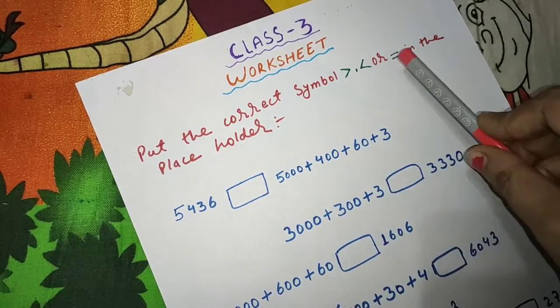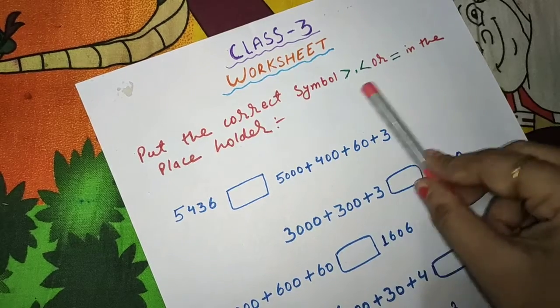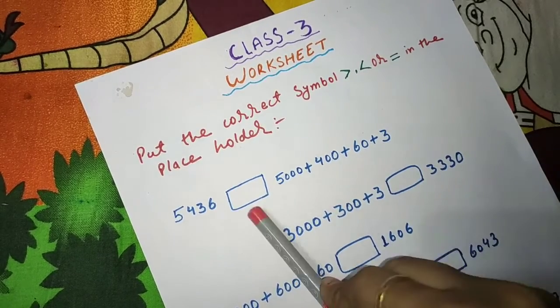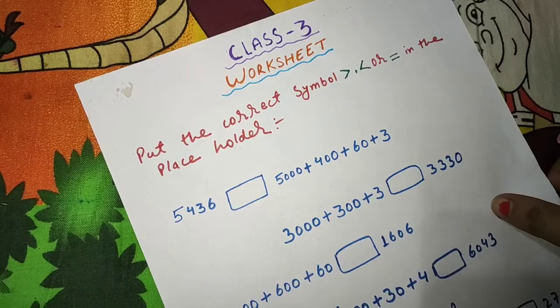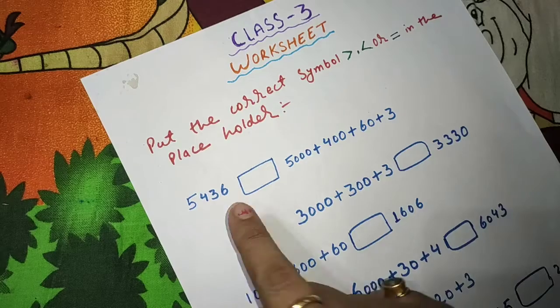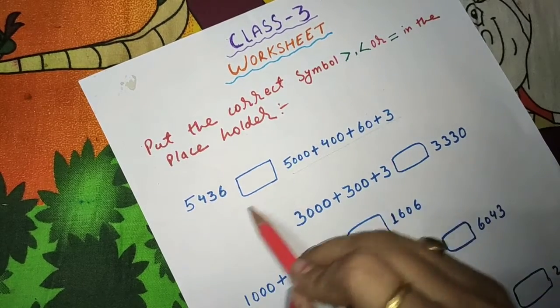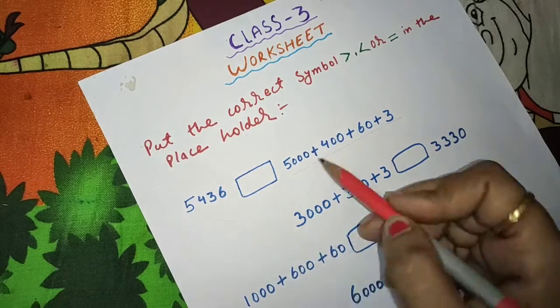Put the correct symbol in the placeholder. This symbol is greater, smaller, and is equal to. It means you have to put it in the same way. Then you have to add it and assemble it.